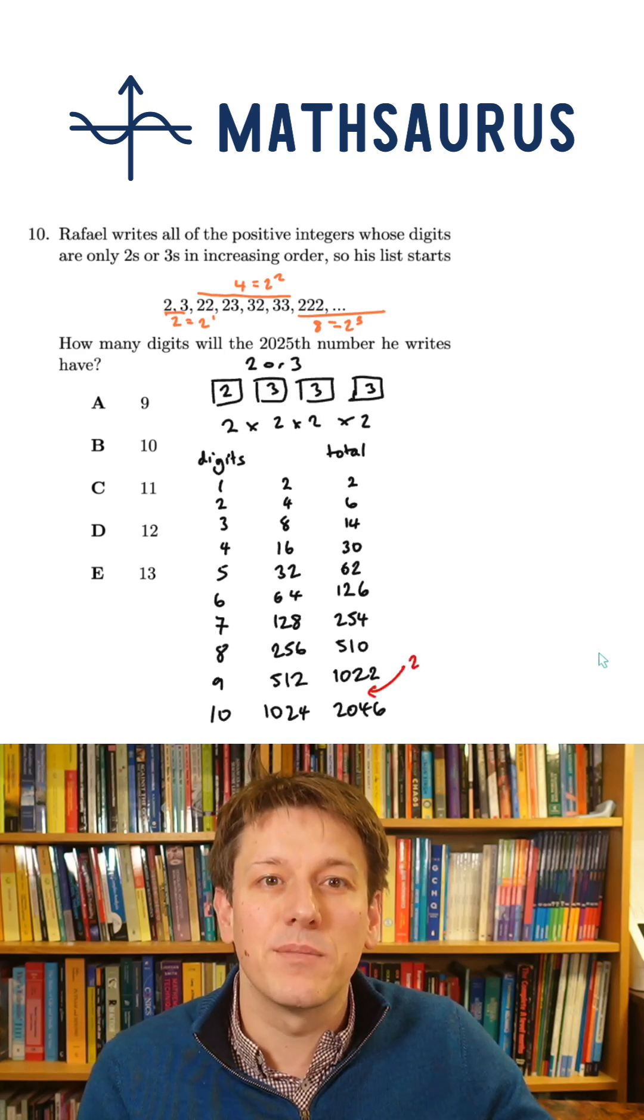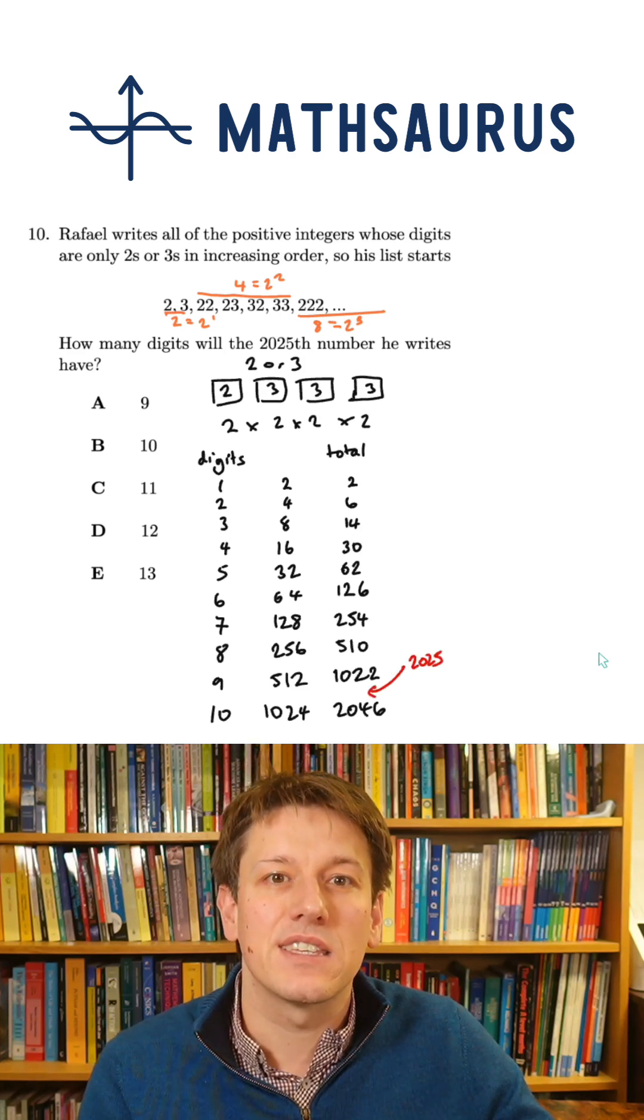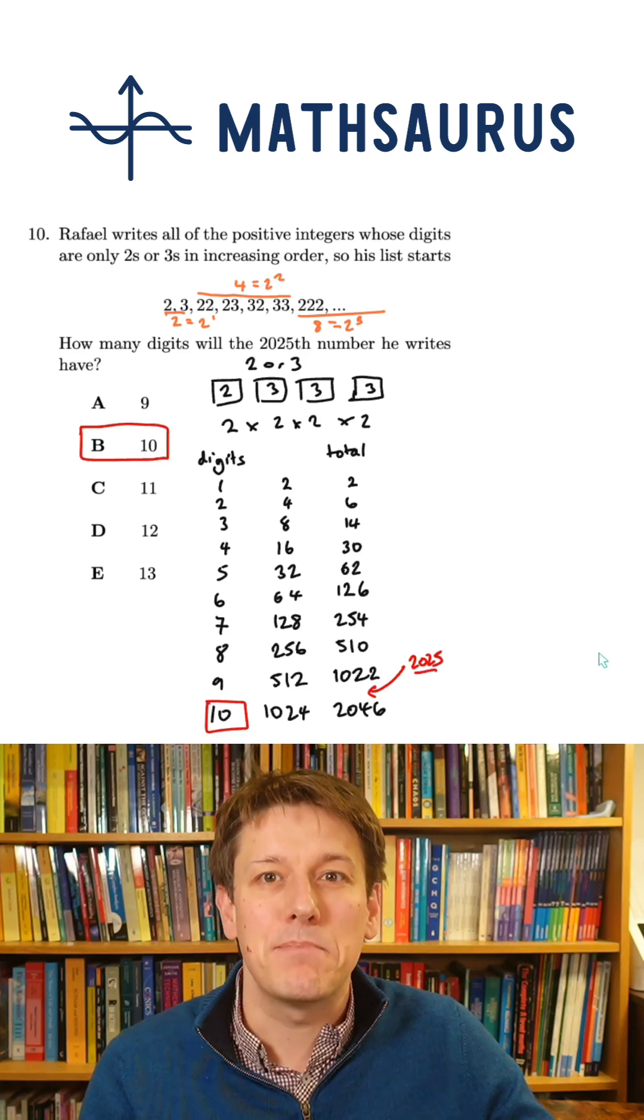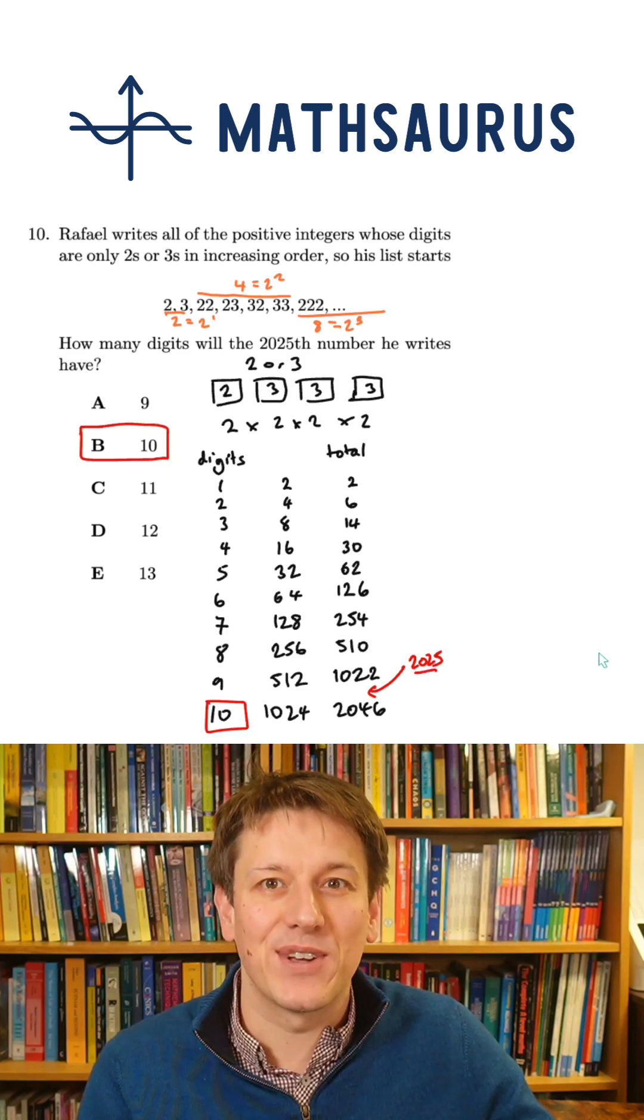So the 2025th number is going to be somewhere in this set. It's going to be one of those numbers that has 10 digits, and the answer to this question is B, 10. So very well done if you got that right.